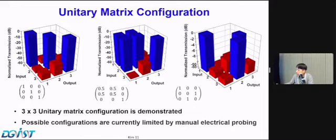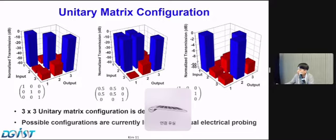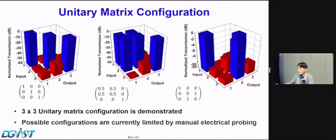Here we demonstrate some unitary matrix configurations using our devices. The left one shows the identity matrix with around 40 dB extinction between ports. The specific configurations are currently limited by manual electrical probing, and we are now trying wire bonding, which can help us make any unitary matrix that we want.